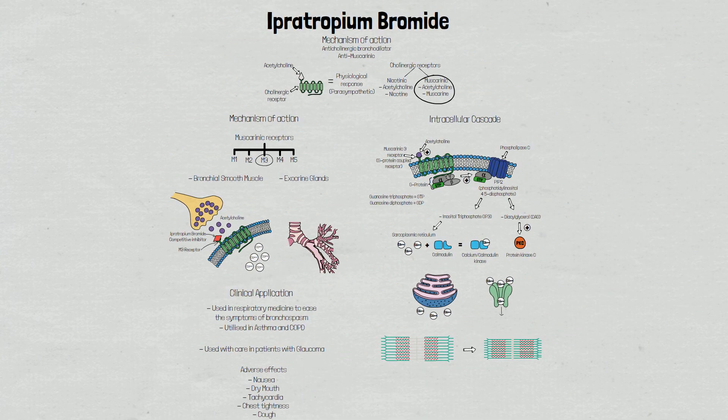To recap, ipratropium bromide is an anticholinergic drug used in respiratory medicine to cause bronchodilation. Ipratropium bromide is also known as an anti-muscarinic because it selectively binds to muscarinic type 3 receptors, which can be located in the bronchial smooth muscle.